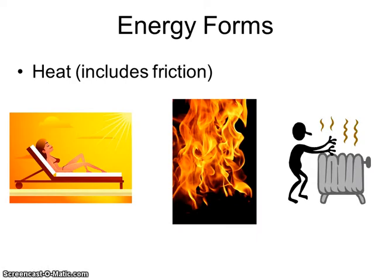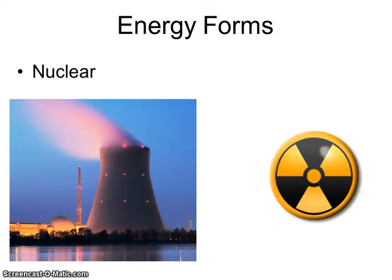Heat, which includes friction. We're going to talk about this type of energy a little bit later on today, where whenever there's a collision that occurs, or any time two surfaces are rubbing against each other, heat energy is always produced. Think about rubbing your hands together — if your hands are cold and you rub them together, it warms them up. You're producing friction. Nuclear energy — you studied this a little bit last year in chemistry, where you're looking at an atom splitting and breaking off and hitting other ones and releasing a tremendous amount of energy.